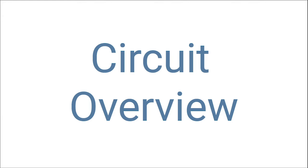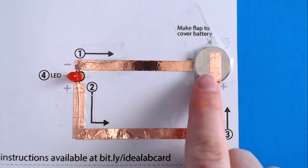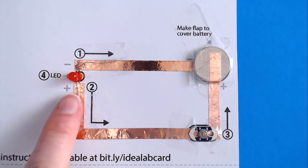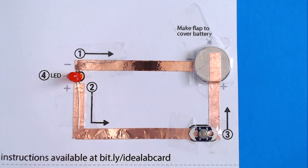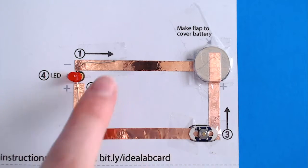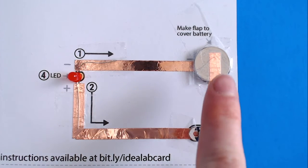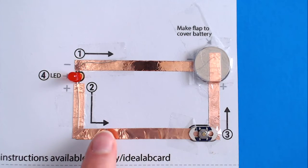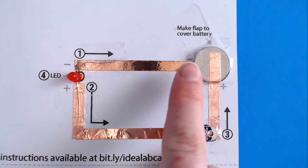Before we start building our card, let's take a look at how the circuit works. This card uses a small battery for power, which will light up a tiny light bulb called a light-emitting diode or LED. The copper tape connecting the pieces is the path the electricity will follow from one side of the battery to the LED and then back to the other side of the battery, making a complete circuit.